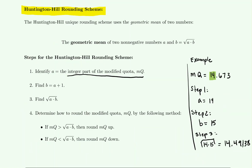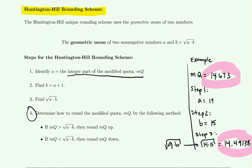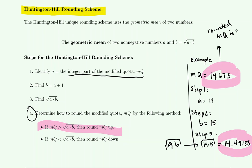The square root of 14 times 15 is approximately 14.9138. Then we compare the modified quota versus this square root of A times B to see which one is larger. If the modified quota is larger than the square root of A times B, round it up; if smaller, round it down. Here, the MQ is 14.673 and the square root of AB is 14.49, so MQ is bigger — we round up to 15.